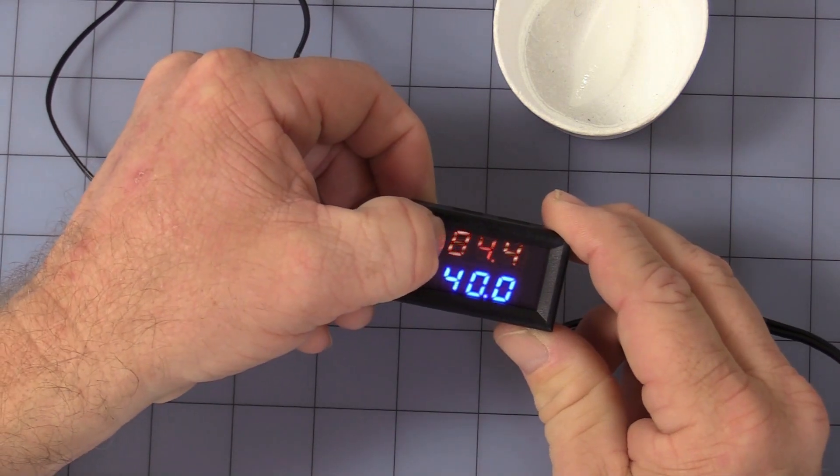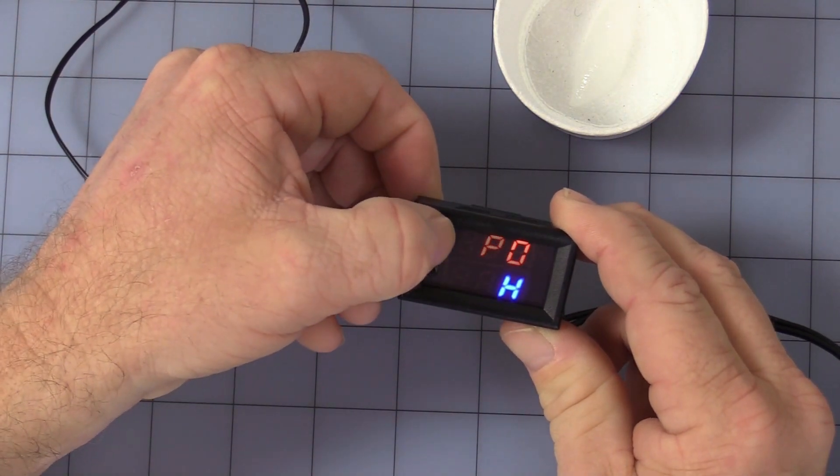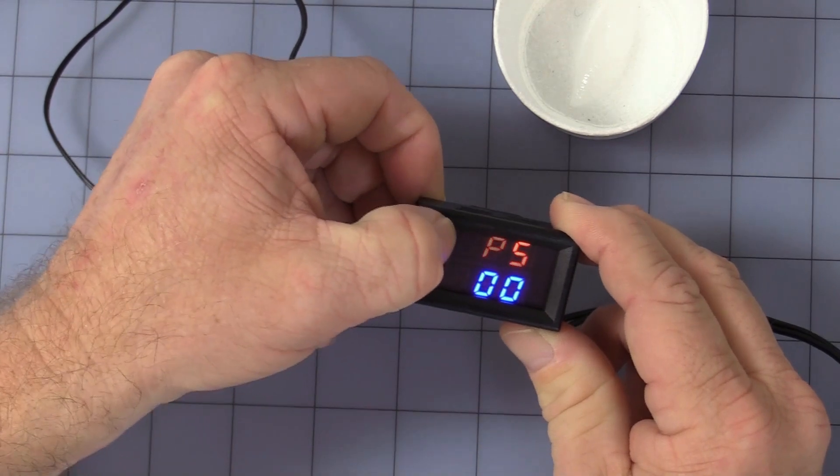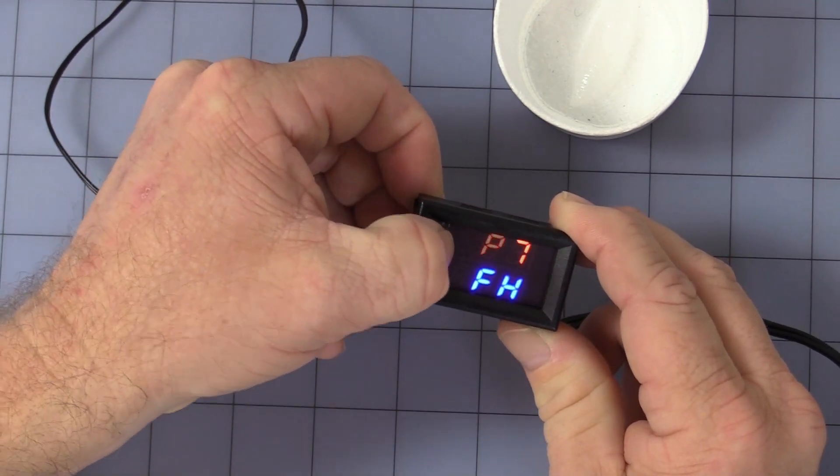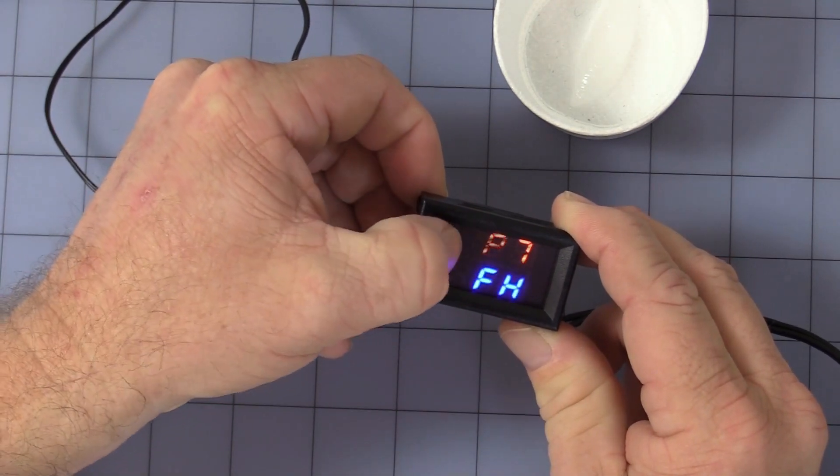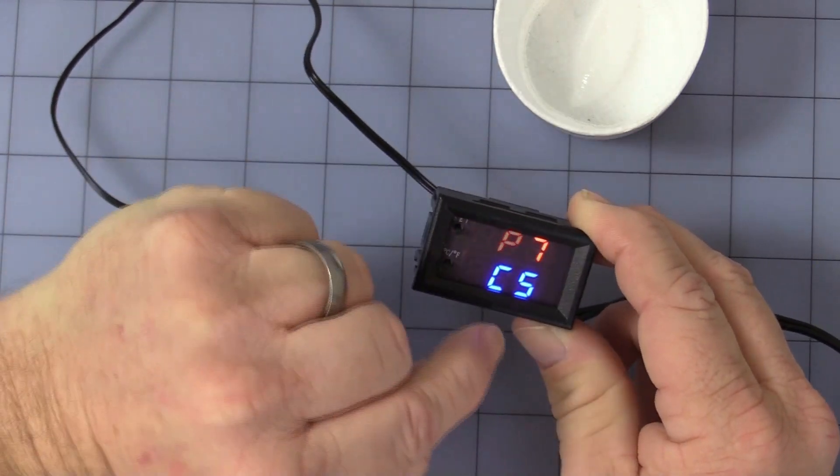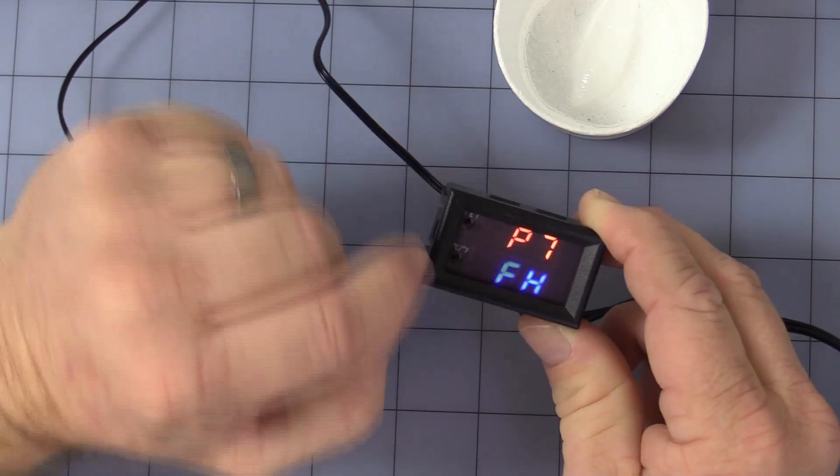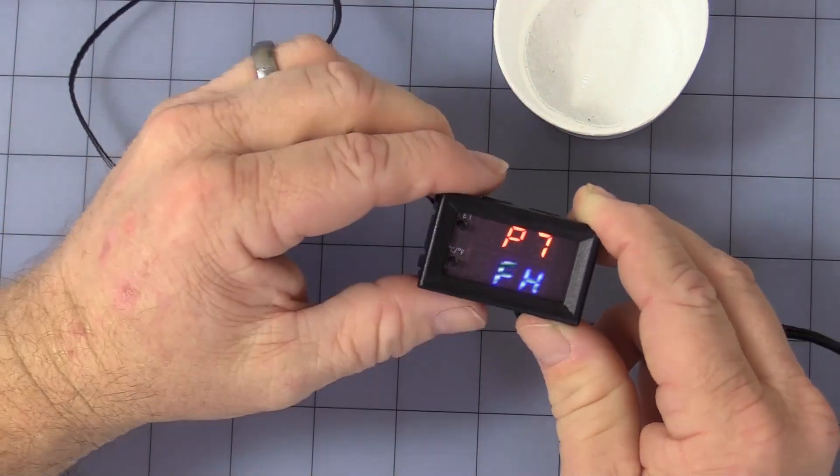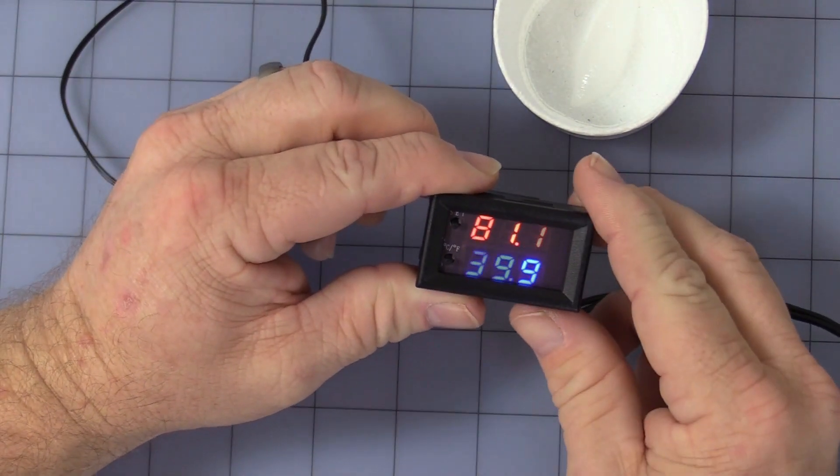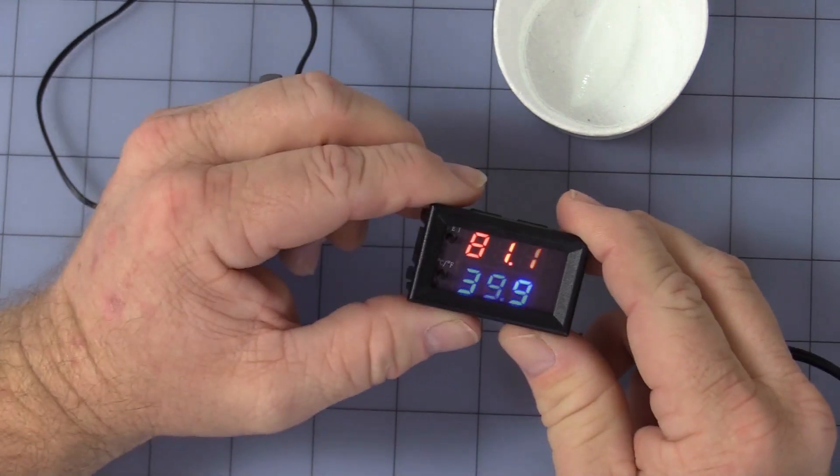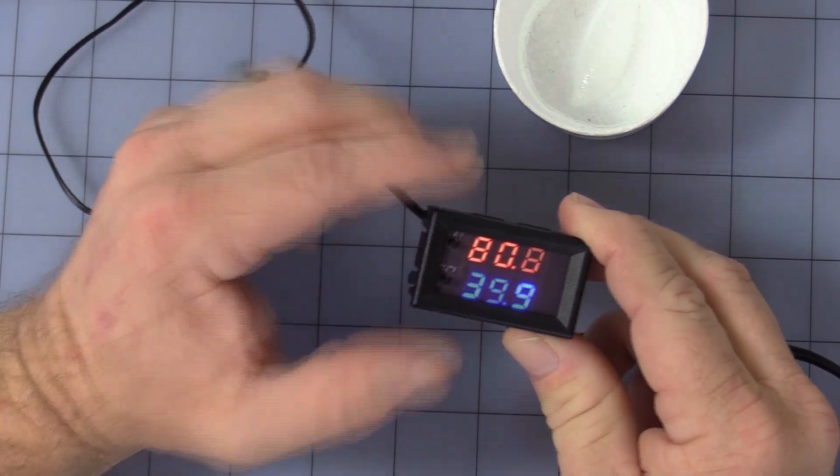P7. The next function is P7. This simply allows you to preset whether you want Celsius or Fahrenheit. When it's powered down and powered back on, I personally prefer Fahrenheit, so we'll just leave it on FH for Fahrenheit. And once it's back, it's back to running the program.